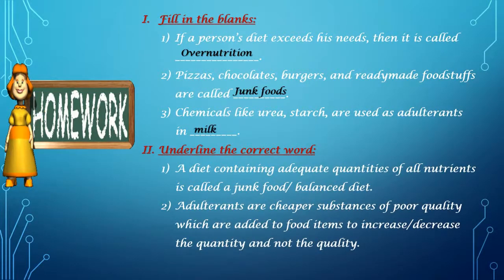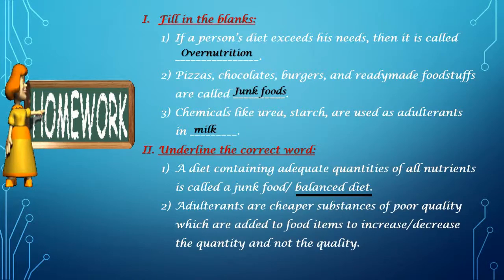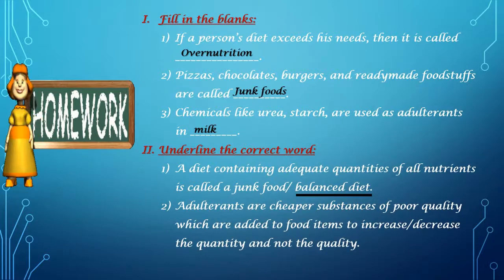The second homework question is to underline the correct word. First: a diet containing adequate quantities of all nutrients is called a junk food, food, or balanced diet — the correct answer is balanced diet. Second: adulterants are cheaper substances of poor quality which are added to food items to increase or decrease the quantity and not the quality — the correct answer is to increase the quantity and not the quality.